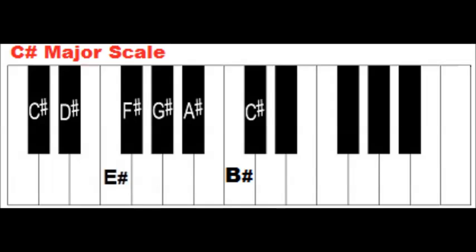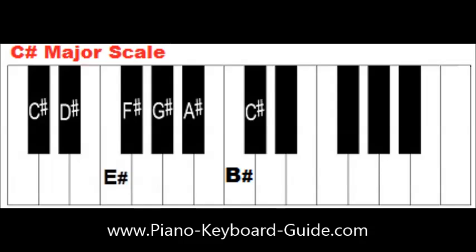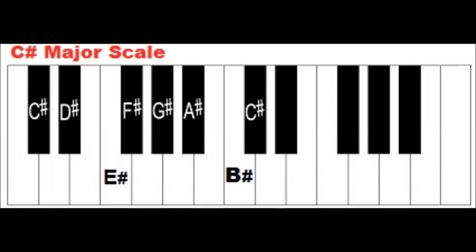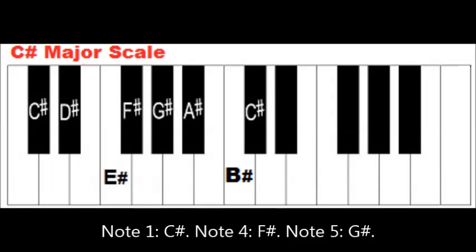Primary chords in a major key are based on the 1st, 4th, and 5th notes of the major scale. The notes of the C-sharp major scale are C-sharp, D-sharp, E-sharp, F-sharp, G-sharp, A-sharp, and B-sharp.